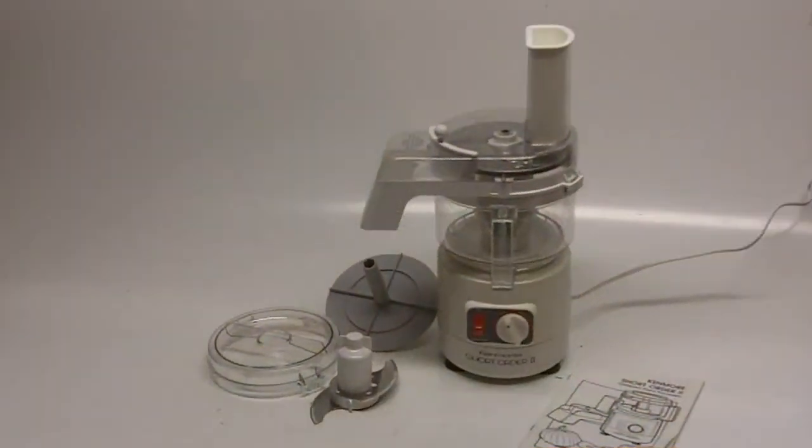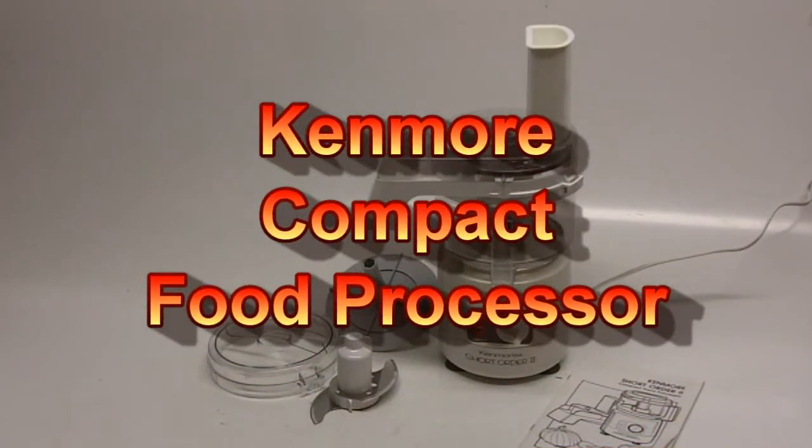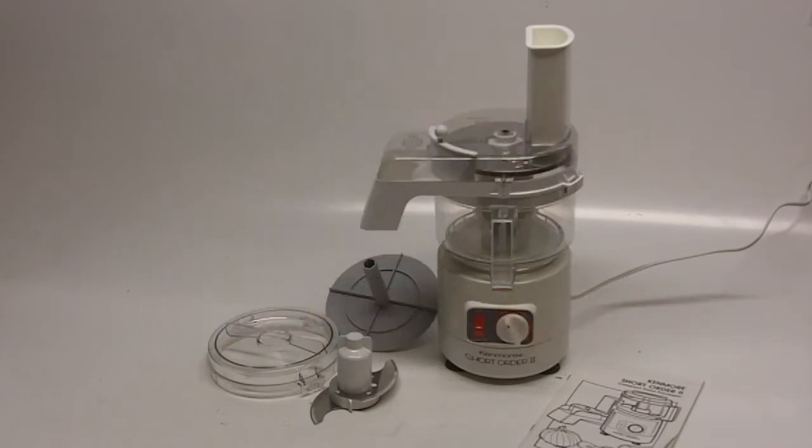You are looking at a Kenmore Short Order 2 compact food processor. Compact is the key word here because this does not take up much space on the countertop at all. It has a really low profile, taller than it is wide, and is lightweight for the amazing amount of power that it produces, so very easy to move around.